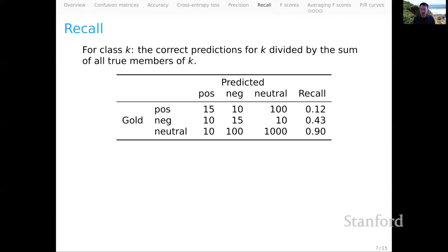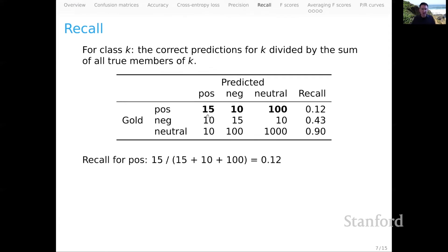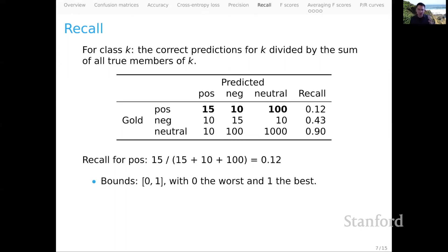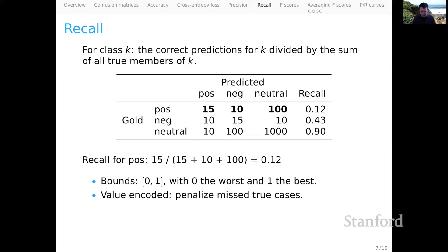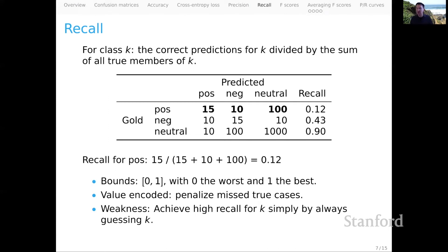Recall is again a per-class notion. For a class K, it's the correct predictions for K divided by the sum of all true members of K — operating row-wise. For the positive class, the numerator is 15 divided by the sum of all values along that row, giving a recall value of 0.12. The bounds are 0 and 1, with 0 the worst and 1 the best. The value encoded is a permissive one — we want to penalize missed true cases. The core weakness is that you can achieve high recall for a class K simply by always guessing K, and that's why it's important to offset this pressure with precision.